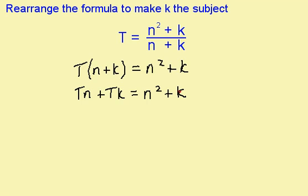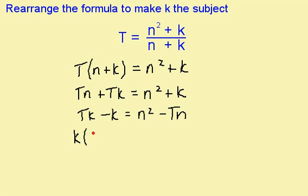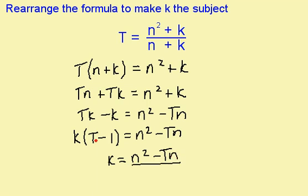I now want to get all the k's on one side of the equation and everything else on the other side. So I'm going to have tk minus this k equals n squared minus this tn. I'm now going to take out a factor of k, which leaves me with t here and minus 1. To get k on its own, I need to divide by t minus 1. So I have k equals n squared minus tn, divided by t minus 1.